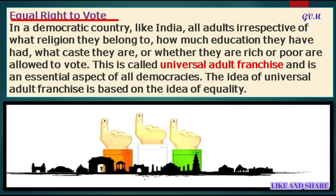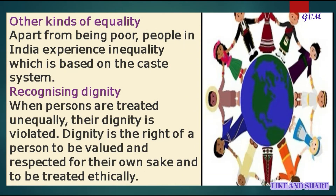If that person doesn't do their work properly, they can be thrown out of power. The right to vote gives a person their right and makes them realize that they are important for society. This is called universal adult franchise, which means every individual who is 18 years of age or above has the right to vote. Universal adult franchise is one of the most essential aspects of a democracy, and this idea is based on the concept of equality.